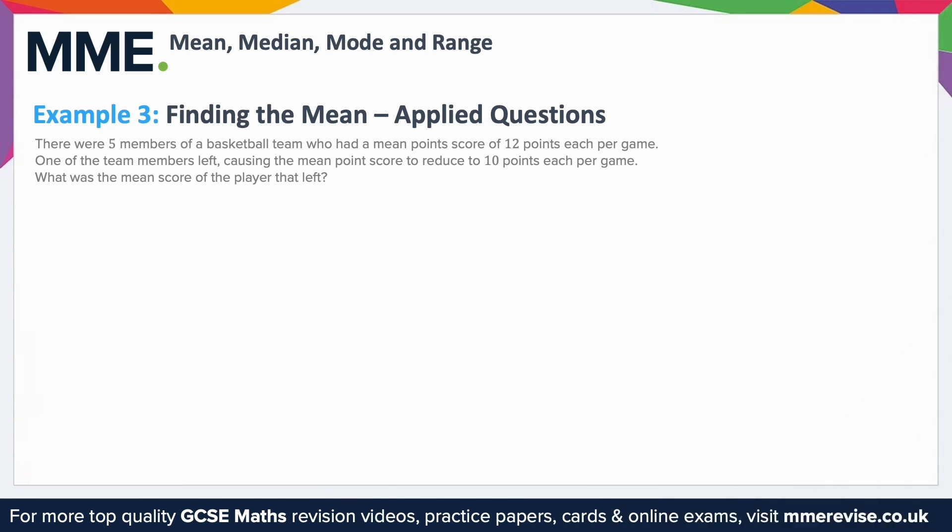Example 3: finding the mean on applied questions. There were 5 members of a basketball team who had a mean point score of 12 points each per game. One of the team members left, causing the mean point score to reduce to 10 points each per game. What was the score of the player that left? We're going to work backwards — normally we find the total points, divide by how many players there were, and that gives us the mean. Working backwards, we know the players and the mean, so we want to work out the total points.